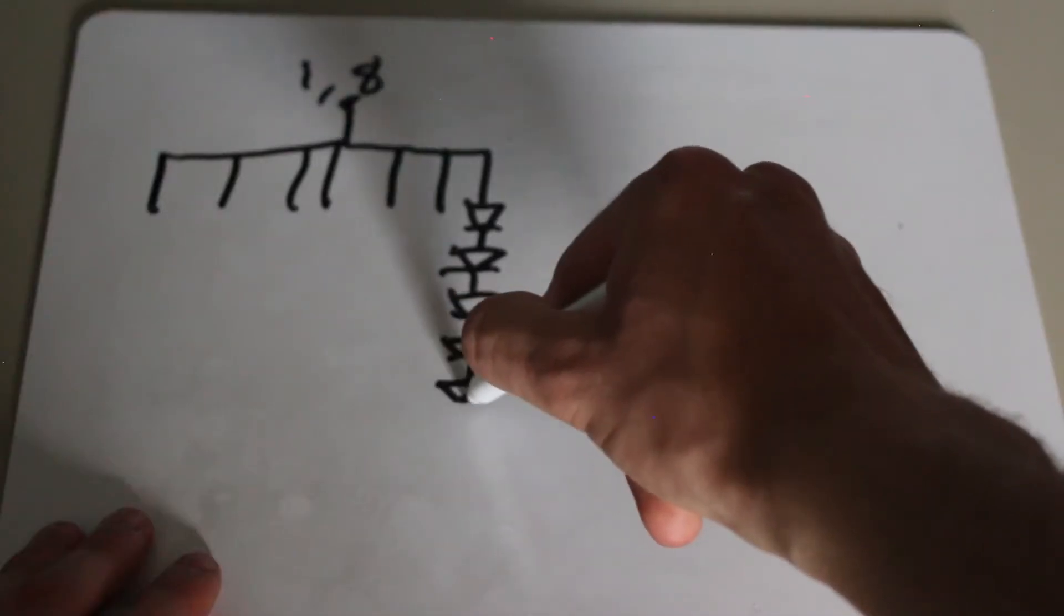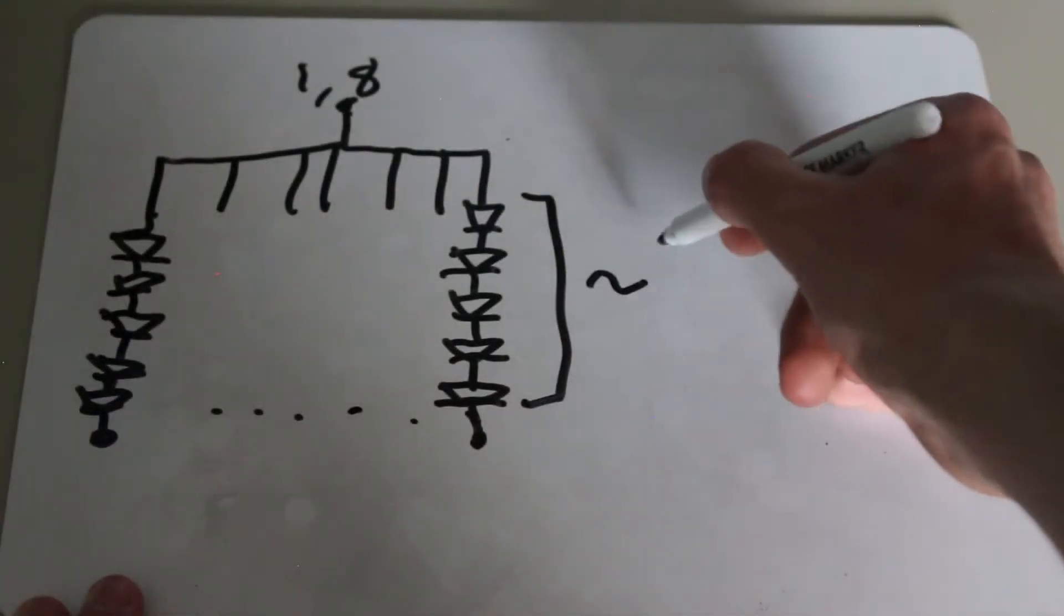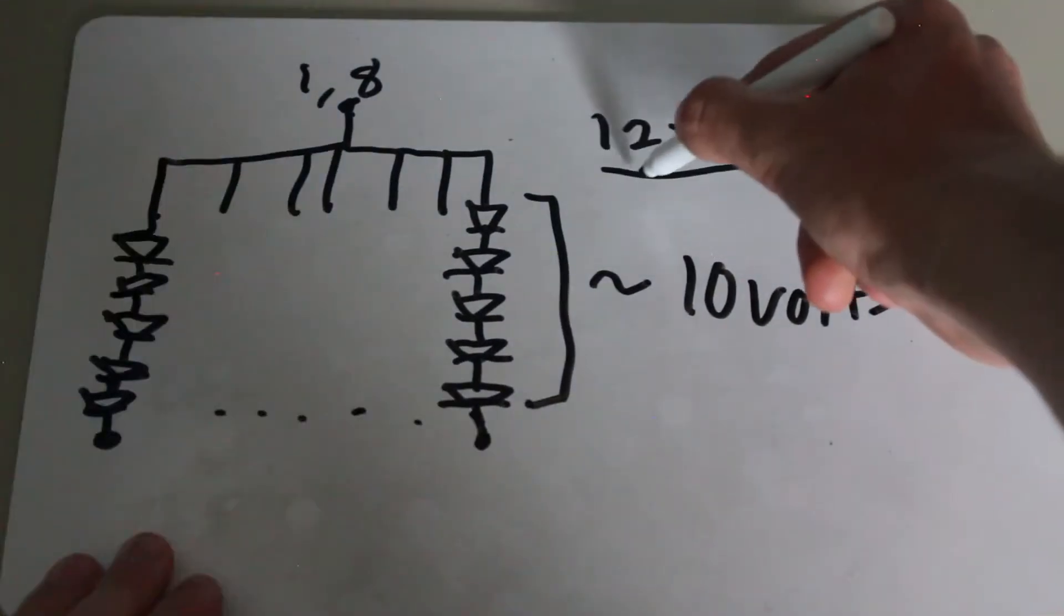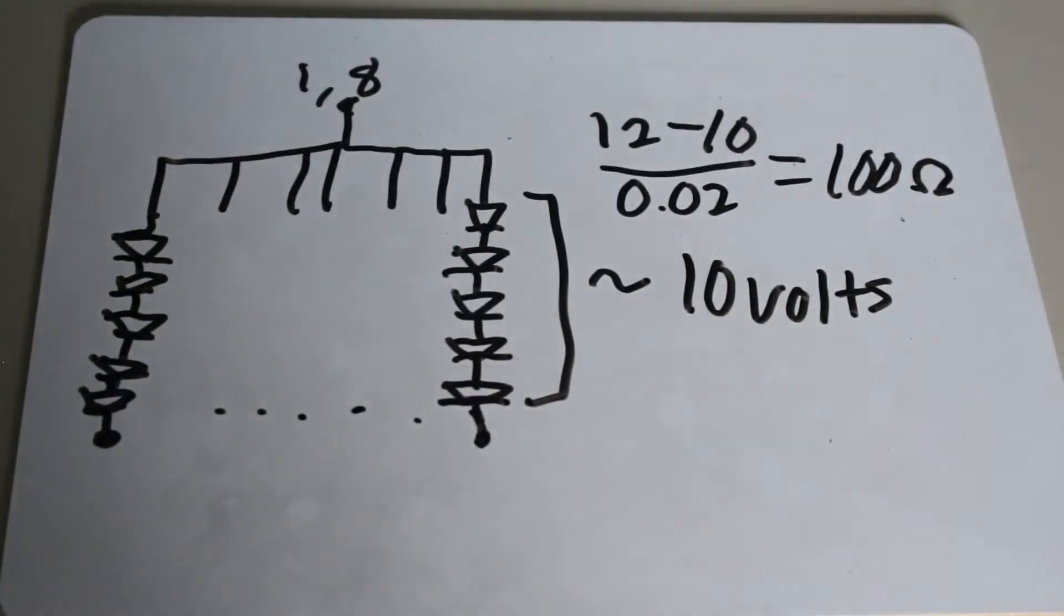Basically, each segment consists of 5 red LEDs in series, equating to a voltage drop of about 10 volts per segment. That means that with a supply voltage of about 12 volts, we would only need a 100 ohm resistor to limit the current through the LEDs.